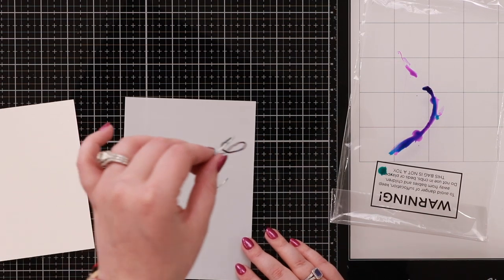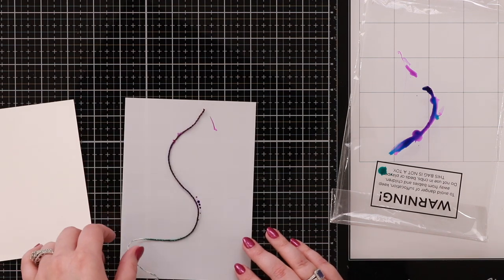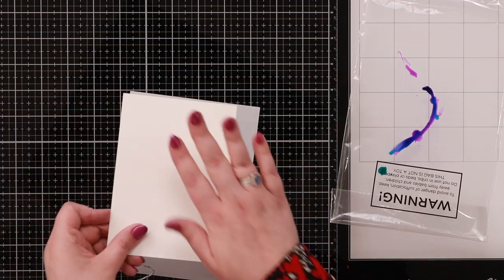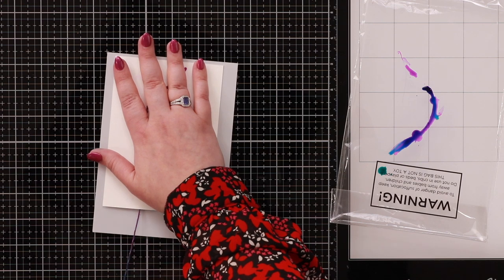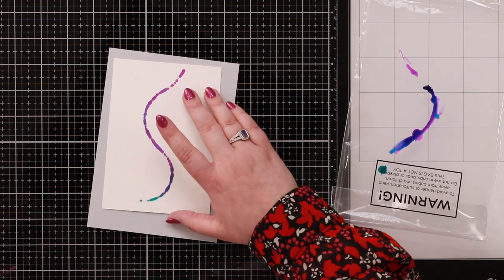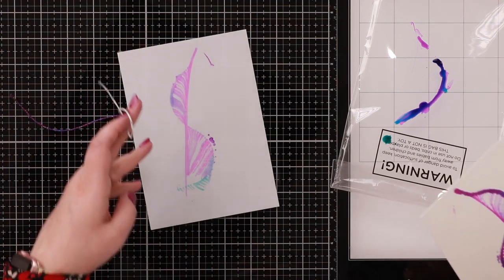The next thing you're going to do, and this is the bit where it took me some practice and it doesn't go right every time, but you just kind of want to lay it down like a bit of an S, place another piece of cardstock on top, apply some pressure, and pull. Look at that, isn't that gorgeous?